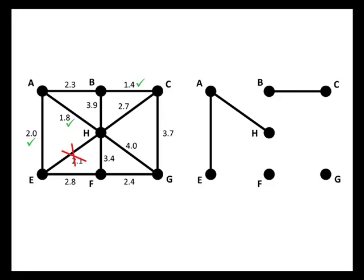The next cheapest edge is the edge from A to B. No circuits there, so check that edge off and keep going. The next cheapest edge is the edge from F to G, costing 2.4.